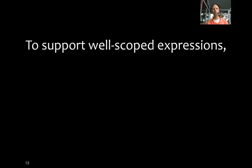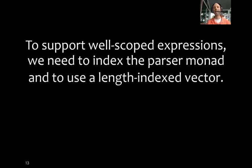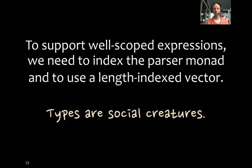So just taking a step back to support having well-scoped expressions, I want my unchecked expressions to be well-scoped. But in order to support that, we needed to index the parser monad and use a length indexed vector. So I wanted something, I just wanted this well-scoped stuff, but in order to do that, I needed to add more types elsewhere. Types are social creatures, right? When we start using some types in some place, we're going to need to add more types in other places to support it. So one worry at this point, thinking about how types are social creatures, is that maybe we end up defining some library that has so many types that it becomes impossible to use.